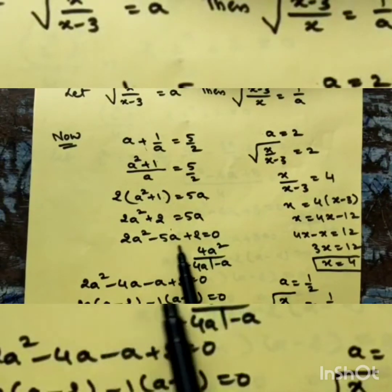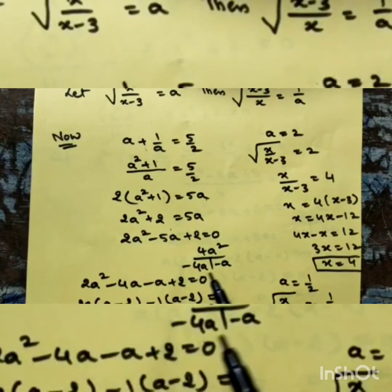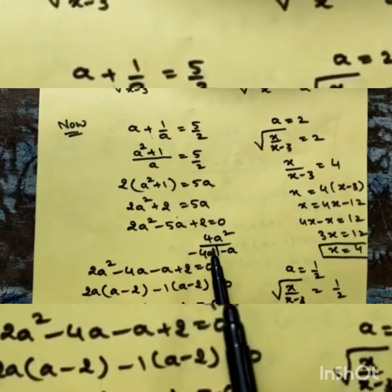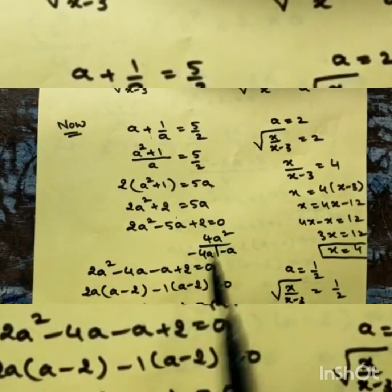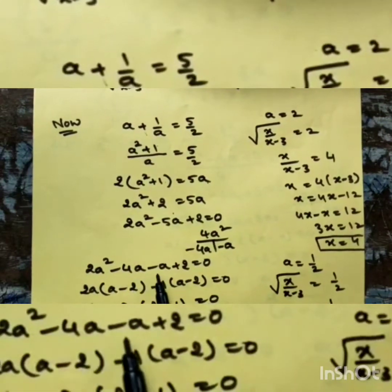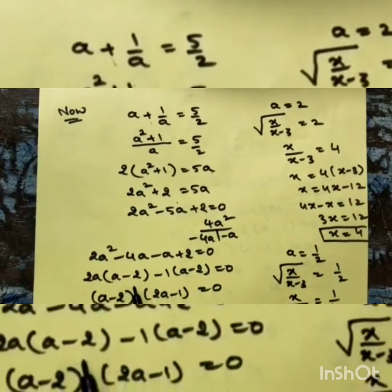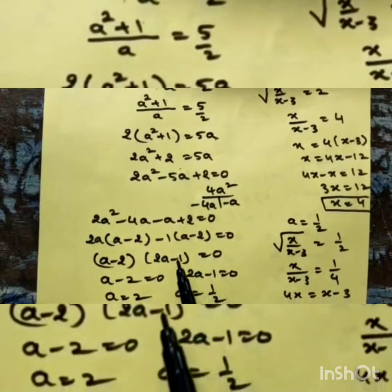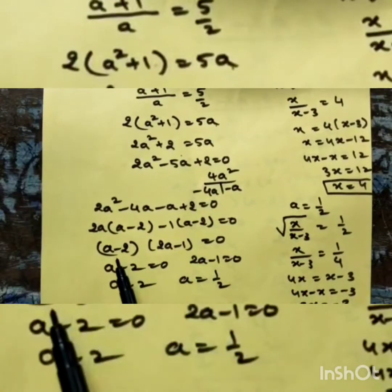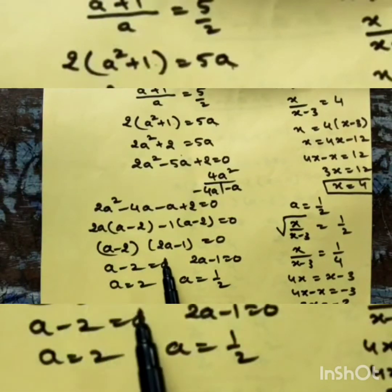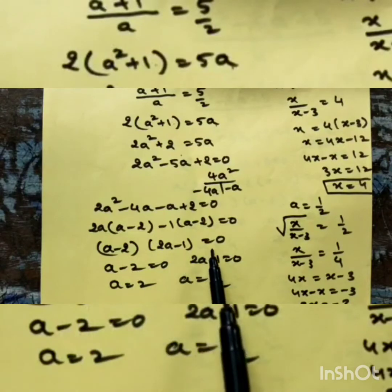This is a quadratic equation. Multiply the constant term with 2a² to get 4a². Split 4a² into two terms such that their sum is -5a and product is 4a². So: 2a² - 4a - a + 2 = 0. Taking 2a common from the first pair and -1 common from the second: 2a(a - 2) - 1(a - 2) = 0. Then (a - 2) is the first factor and (2a - 1) is the second factor.